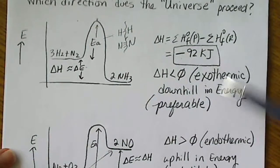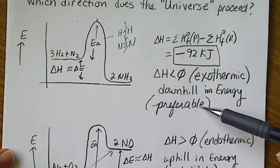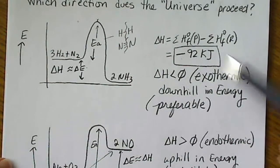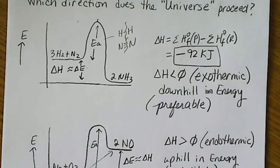So the sign of delta H is going to be very important. And again, exothermic is favorable or preferable. It means the universe prefers to proceed in that direction.